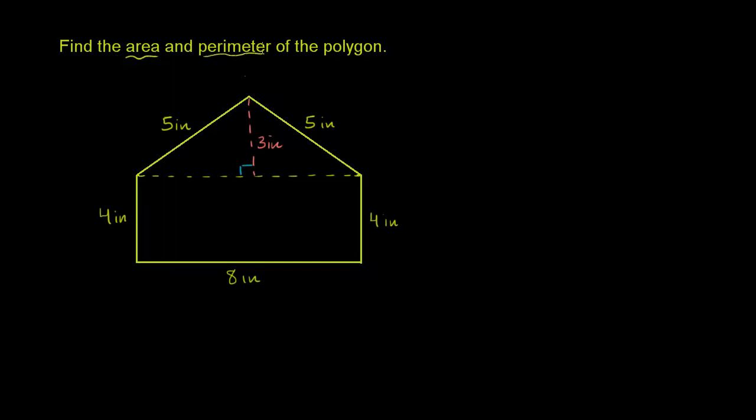Find the area and perimeter of the polygon. So let's start with the area first. So the area of this polygon, there's kind of two parts of this.